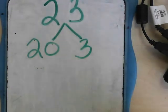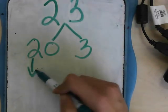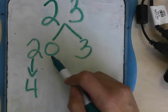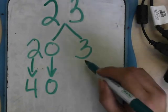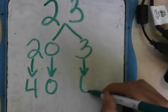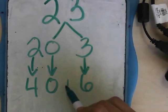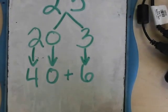We're going to double each number individually, one by one. So double 2 is 4. Double 0 is 0. Double nothing is nothing. And double 3 is 6. 40 plus 6 equals 46.